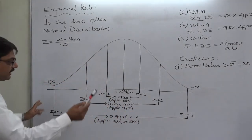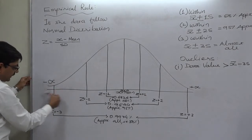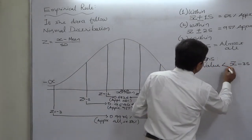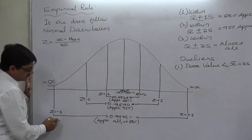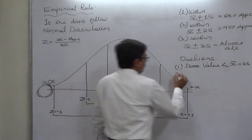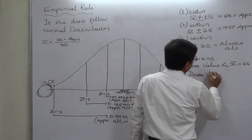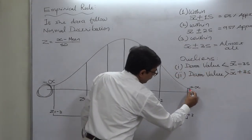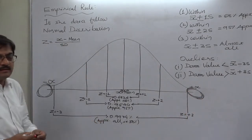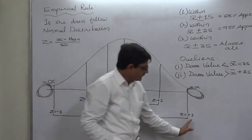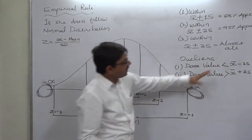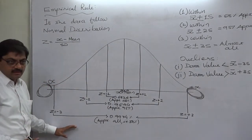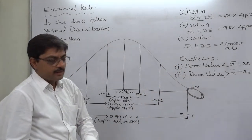That means if the data value is on the chart, it would fall to the left-hand side of the line at Z=−3 — it is less than x̄ − 3s. Or, a data value is an outlier if it is greater than mean plus 3 standard deviations, falling beyond Z=+3. These limits are referred to as the lower limit and upper limit for outliers.